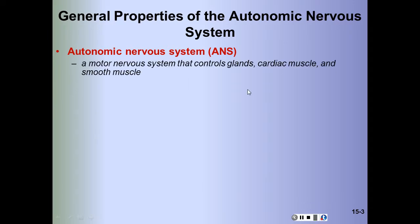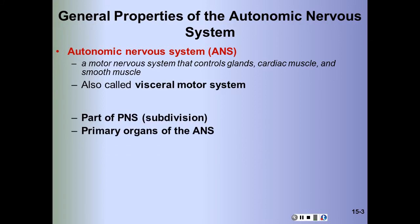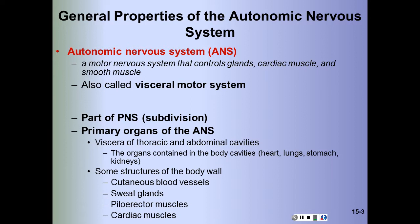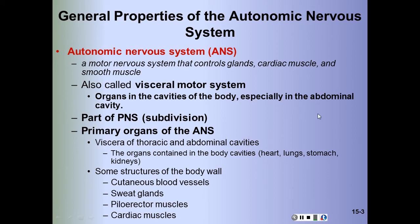The autonomic nervous system can be defined as a motor nervous system that controls glands, cardiac muscle, and smooth muscle. It is also called the visceral motor system, to distinguish it from the somatic motor system that controls skeletal muscle. Its primary target muscles are the viscera of the thoracic and abdominal-pelvic cavities, and some structures of the body wall including blood vessels, sweat glands, and piloerector muscles.